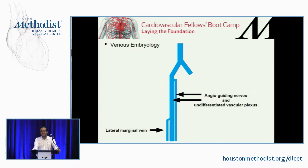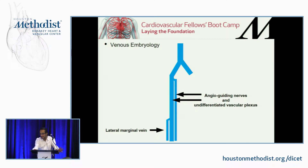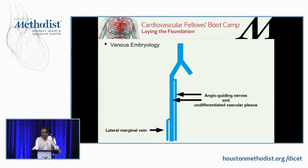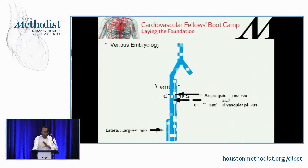The first vein in the fetus that appears and persists all the way to adulthood — that might be one of those questions people like to ask, especially on tests — is the lesser saphenous vein. The short saphenous vein, which is a branch formed by the lateral marginal vein, is the first vein that appears in the fetus and persists to adulthood. The greater saphenous vein and deep system are going to be formed by a combination of angiogenic nerves and undifferentiated vascular plexus.